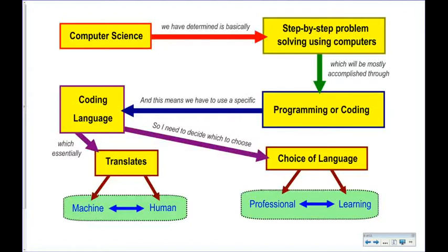Here's where we've gone through our theory unit. We started with the assumption that computer science is basically step-by-step problem solving using the computer. That's why the first unit got your brain in the right mindset — it talked about problem solving in a step-by-step way, and where you can take a problem and break it down into smaller problems, i.e. top-down design.